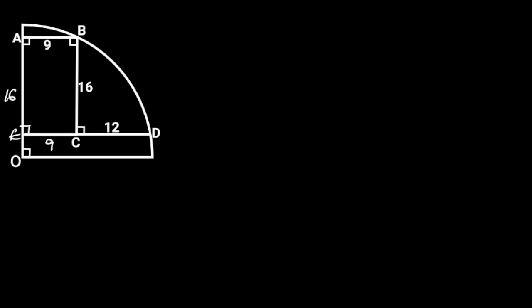Next, let's draw a straight line from O to D. Observe that line OD is the radius of the quarter circle. Let's call the radius X and OE, Y.